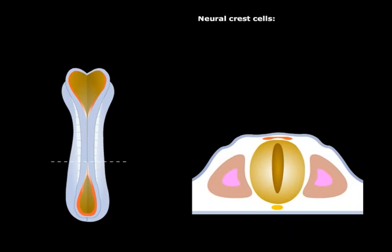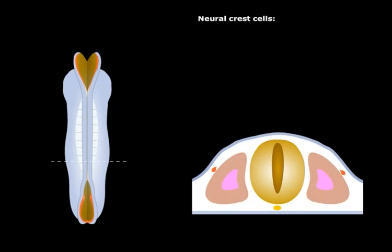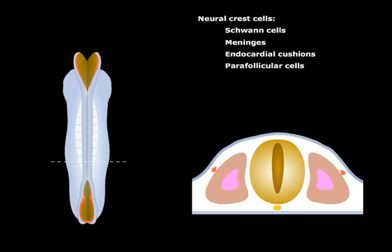The neural crest cells migrate throughout the body to form a wide variety of cell types, including Schwann cells, the meninges, endocardial cushions, parafollicular cells, and the adrenal medulla.